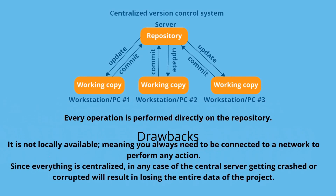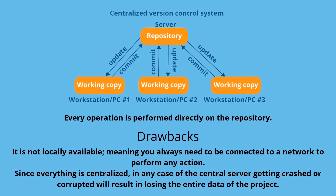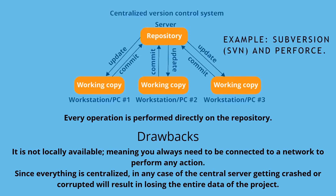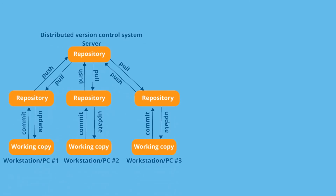The drawbacks are: first, it is not locally available, so you have to connect with the server. Second, since everything is centralized, if the central repository — the server in your office — crashes or gets corrupted, you will lose the entire data of the project because it's not stored anywhere else. We cannot recover it. Examples of centralized version control systems include CVS, Perforce, and SVN.